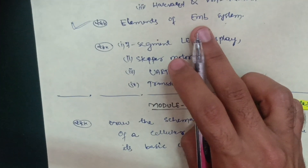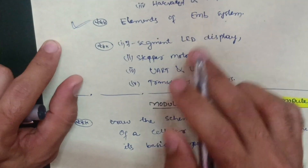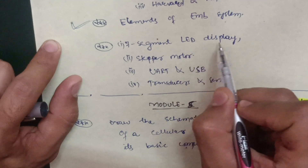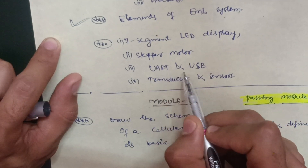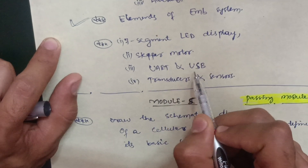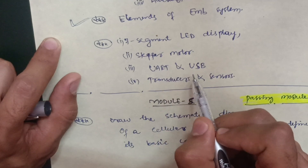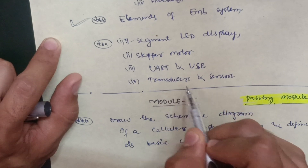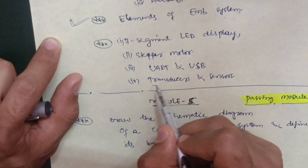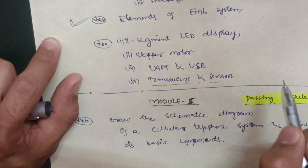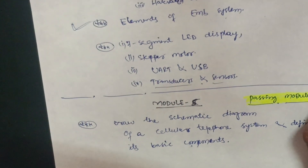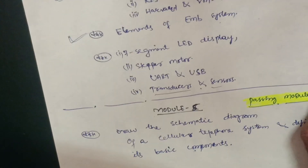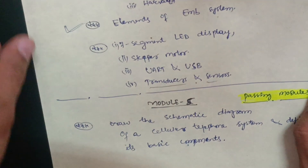The next topics in Module 3 are elements of embedded systems, seven-segment LED display, stepper motor, and UART versus USB — you should be able to differentiate between UART and USB. Also cover transducers and sensors, where a little bit of knowledge is sufficient. This much content is enough to cover Module 3, which I earlier mentioned is a passing module.